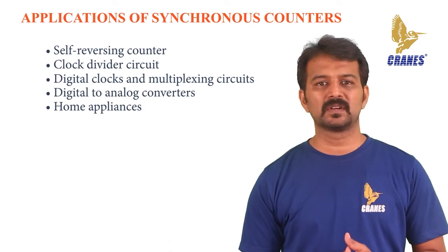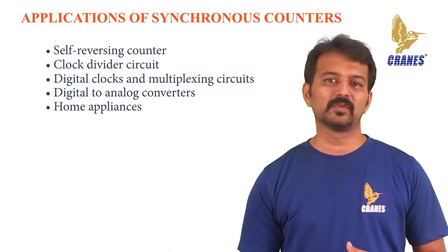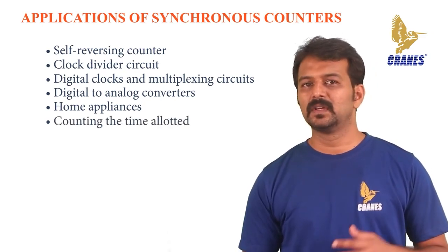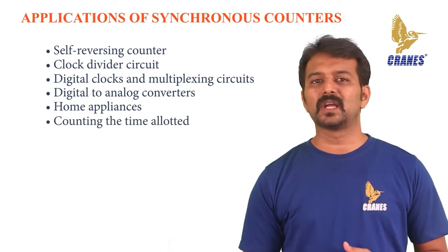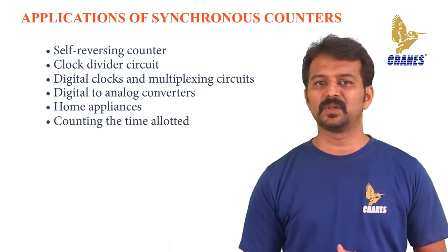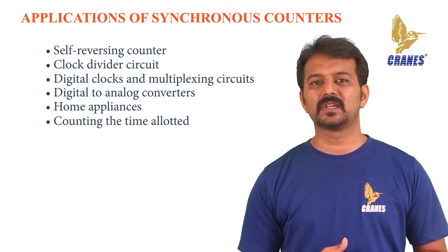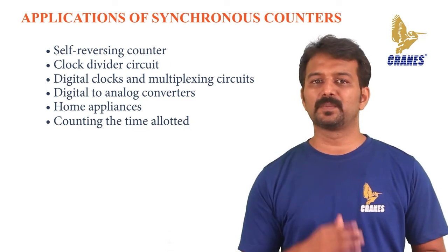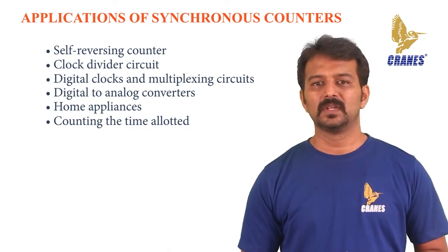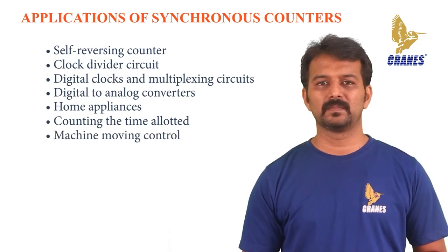Further applications include alarm clocks, AC timers, camera timers for taking pictures, flashing light indicators in automobiles, car parking controls, and counting time allocated for special processes or events by a scheduler. The parallel load feature can also be used to preset the counter to some initial count, and they are used in machine movement control.